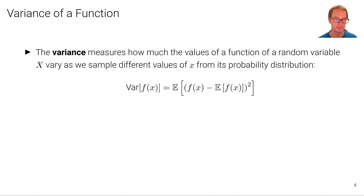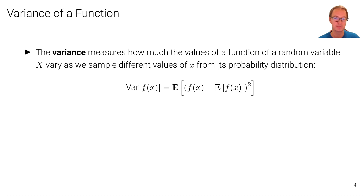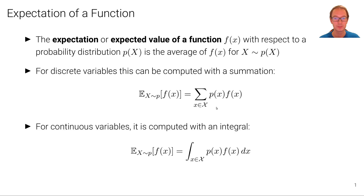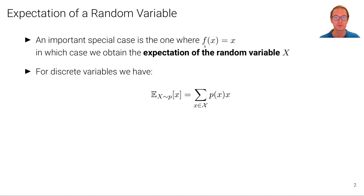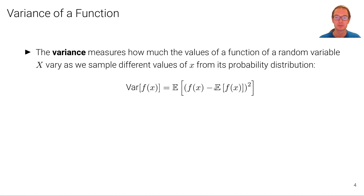Let's now move to the variance of a function. Similarly, we can use the identity function to obtain the variance of a random variable or the covariance. The variance measures how much the values of a function of a random variable x vary as we sample different values of x from its probability distribution. The variance of f of x is defined as the expectation of f of x minus the expectation of f of x, that whole quantity squared. We compute the expectation over the function minus that expectation, squared — and this is what we call the variance.